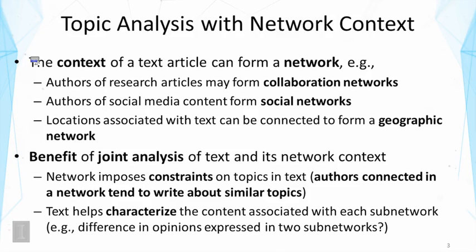The context of a text article can form a network. For example, authors of research articles might form a collaboration network, or authors of social media content form social networks. In Twitter, people might follow each other; in Facebook, people might claim as friends of others. Such a context connects the content of the authors. Similarly, locations associated with text can be connected to form a geographic network. In general, the metadata of text data can form some kind of network if they have relations.